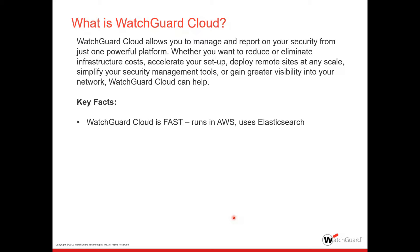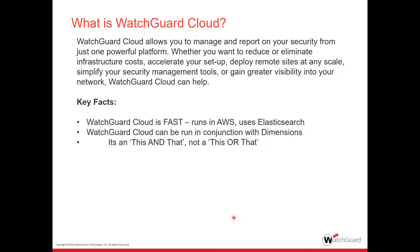Some key facts. WatchGuard Cloud is fast — much faster than running Dimension on-site. WatchGuard Cloud is similar to Dimension on-site, but better. It's significantly faster, so you're going to love that. It uses AWS Elasticsearch as an example.